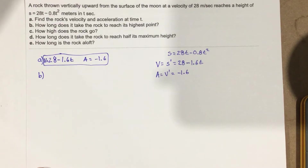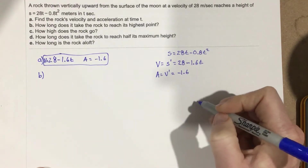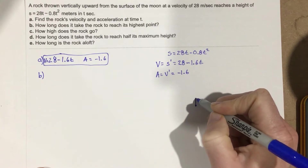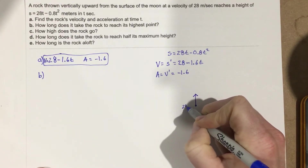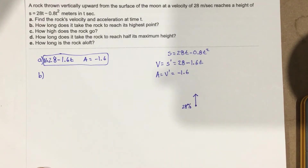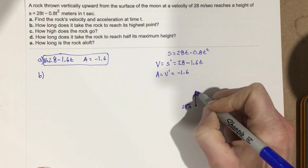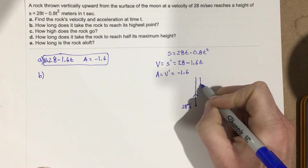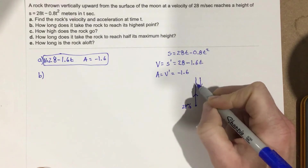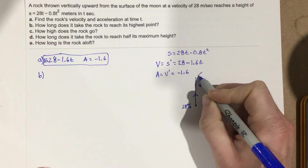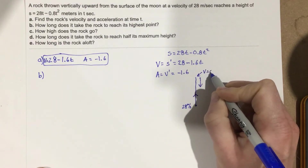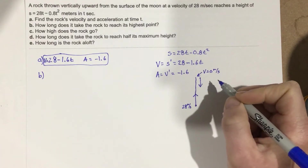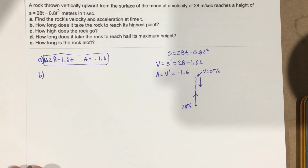Part B: How long does it take the rock to reach its highest point? If you throw a rock upwards with an initial speed of 28 meters per second, eventually it's going to start coming back down. At the highest point, the velocity will be 0 meters per second. So if we find the time when velocity equals zero, that'll be the highest point.